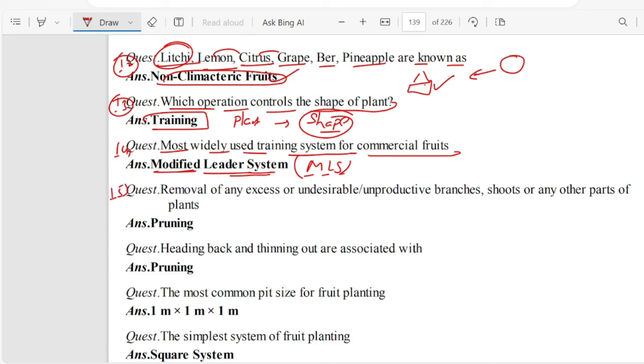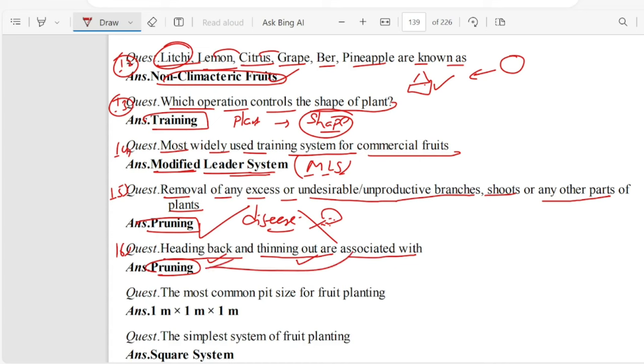Question number 15. Removal of any excess or undesirable unproductive branches, shoots, or any other parts of plant. This means pruning. This removes diseased parts. Question 16. Heading back and thinning out are associated with pruning.